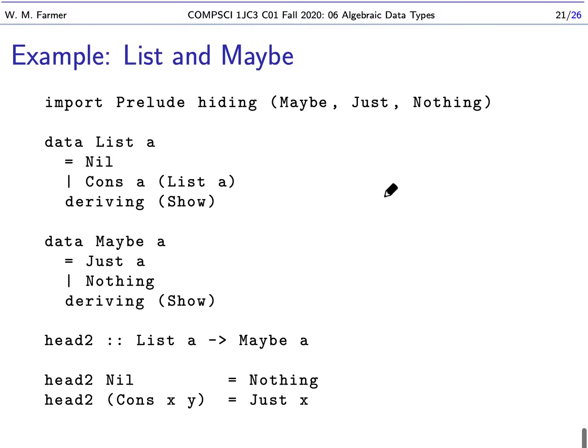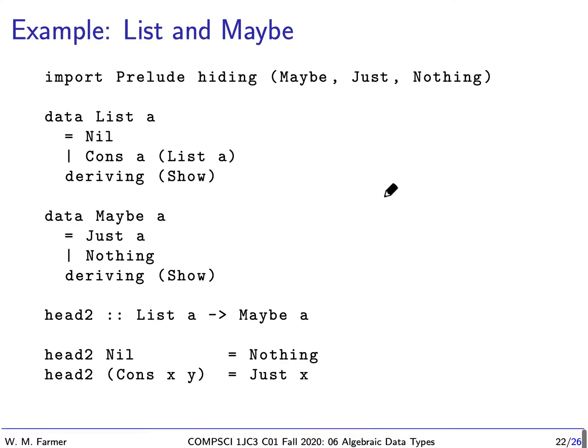Okay, so here's an example using list and maybe. I'm going to import the prelude. I'm going to hide maybe just and nothing because I'm going to define those myself. So I define the list type like this. I define the maybe type like this.